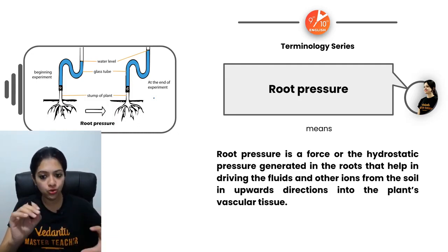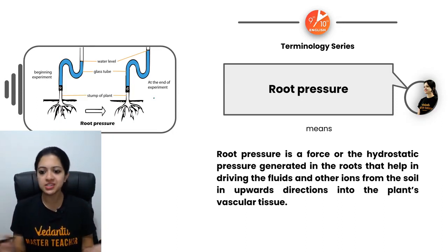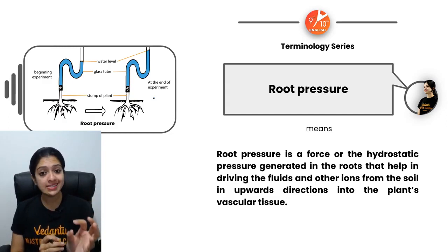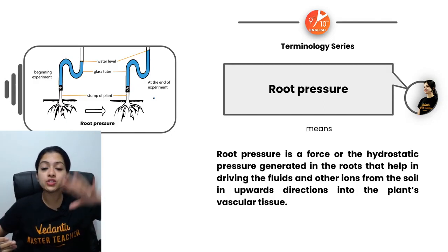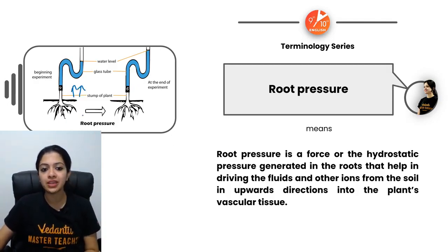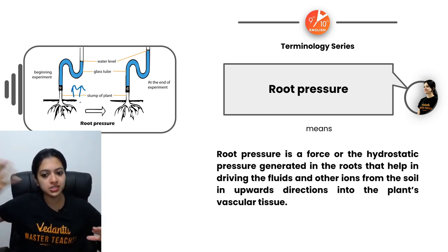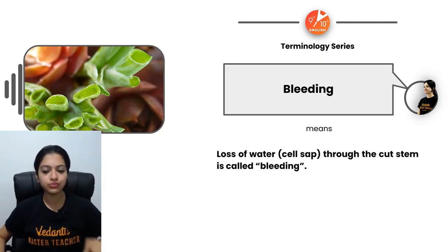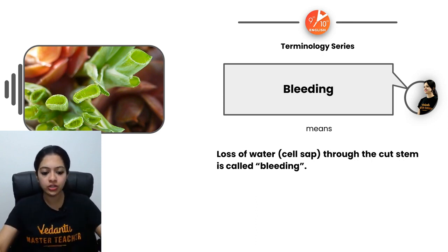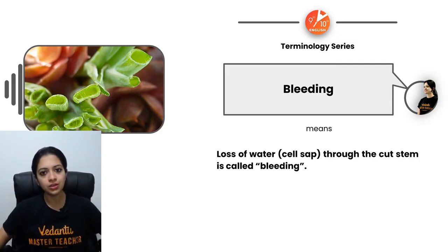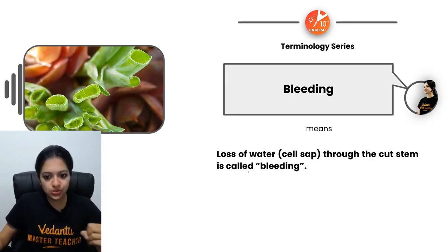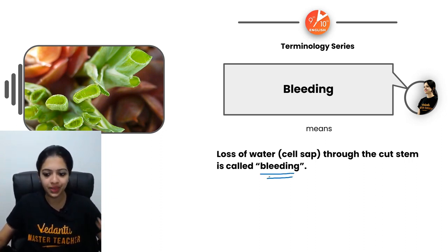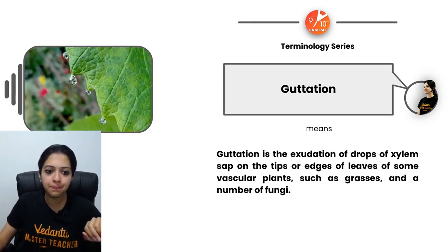Root pressure is a force generated in the roots that helps drive the movement of fluids and ions from the soil upward into the plant body. It pushes the movement of fluids and ions from soil to the upper parts of the plant. Bleeding is the loss of water or sap through a cut stem — we use the term 'bleeding' because it occurs through an injured part of the plant body.